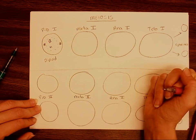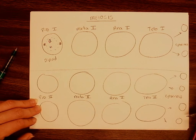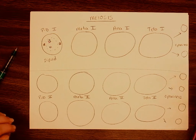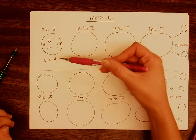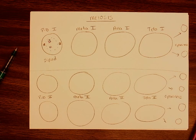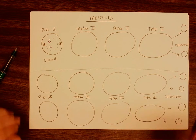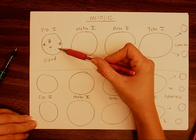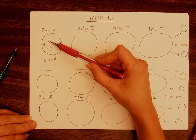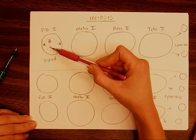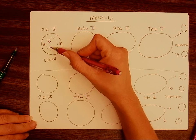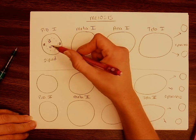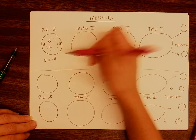At the end of meiosis, we're going to have four haploid cells. In the first part of meiosis — meiosis I — we're going to start with a diploid cell and end up with two haploid cells. So in prophase I, the nucleus breaks down, our homologous chromosomes pair up with one another, and this is where crossing over can occur — a little piece of one chromosome can be swapped with a little piece of the other. This is going to give us our genetic diversity.